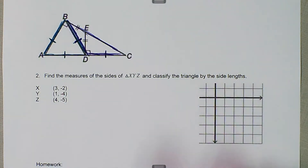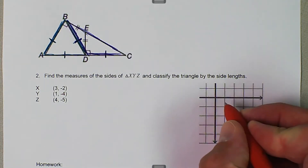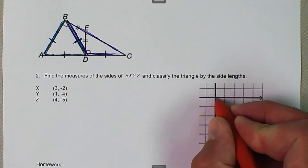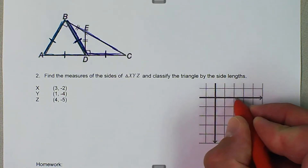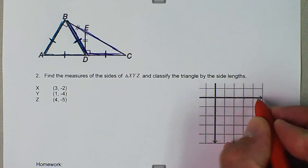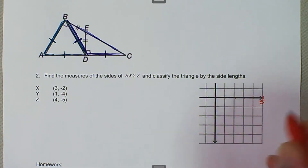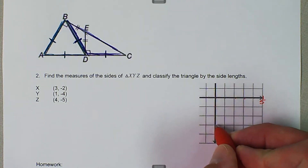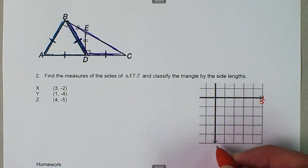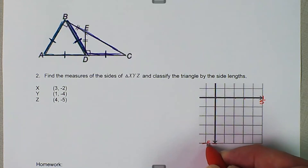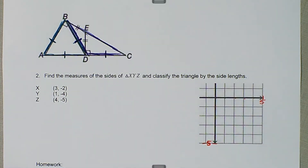So the first thing we want to do is we can graph this triangle. So we want to set our grid, starting from the origin and marking out to 5 and negative 5. Now we can go and plot our points.